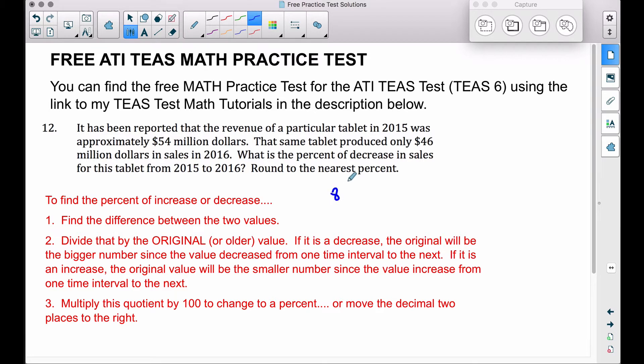Let's subtract those two—that's going to be the difference between them, and that's going to be $8 million. 54 million minus 46 million is 8 million dollars. Step number one is done. Step number two: divide that by the original.